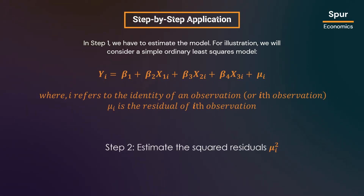In step two, we have to estimate the squared residuals, that is mu-i-squared. We simply square the residuals estimated from the regression. These squared residuals are then used to run an auxiliary regression.